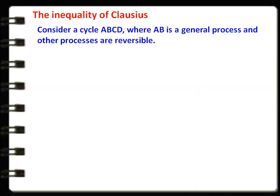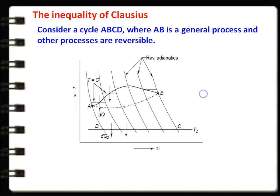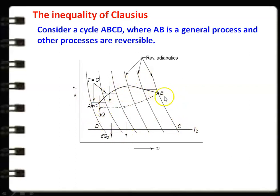First, we take the inequality of Clausius — the Clausius statement. We consider a process A-B-C-D. The curved path is A-B. C is a reversible adiabatic process. C to D is a reversible isothermal process, and then D to A. So A-B-C-D is a general cycle. Here A-B is a general process, whether reversible or irreversible.